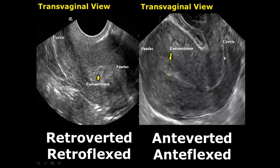Here we have the anteverted and anteflexed uterus. You can see that the fundus is on the left side of the image because it is bent and facing anteriorly. The cervix is also facing upward, so it is anteverted, and the body is folded and facing anteriorly.